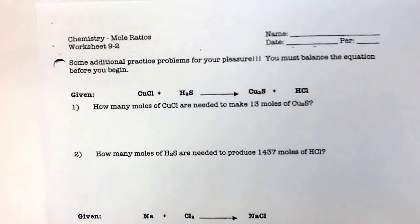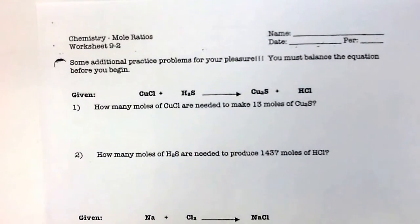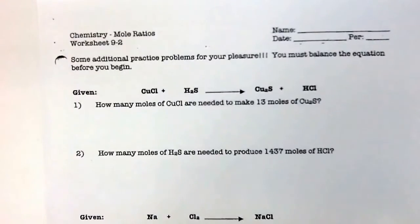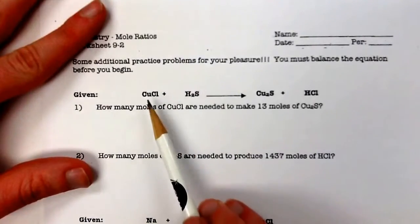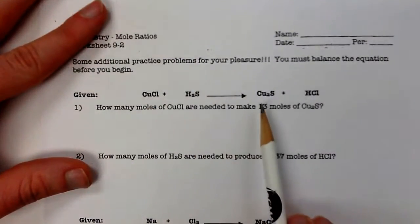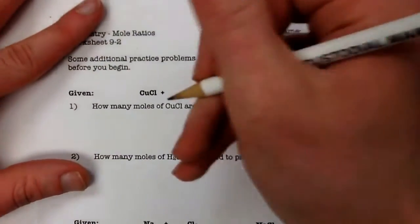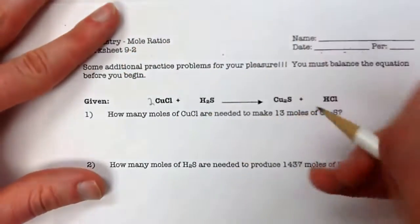They give you CuCl plus H2S gives you Cu2S plus HCl. So for this, we first look at our coppers. We have one copper, we have two coppers. So to balance, I've got to put a two right here.